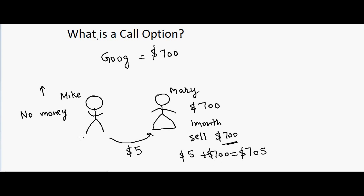For Mike, if the stock goes up he's going to make money without exactly owning the stock — only by paying five dollars. Let's look at the scenarios: the stock can go to $690 on the downside, or go up to $715 on the upside.